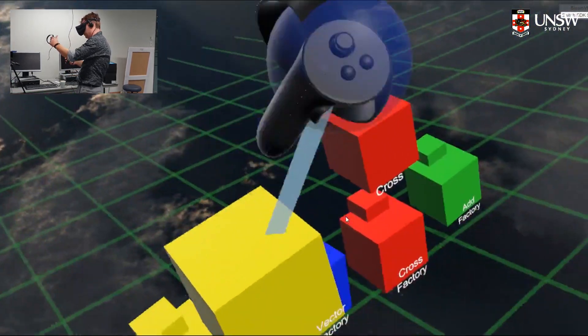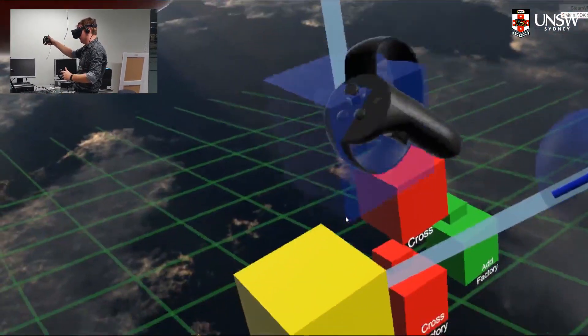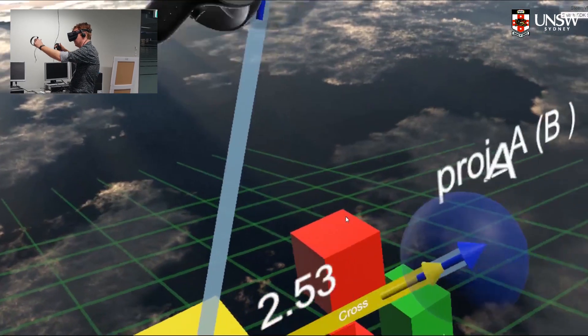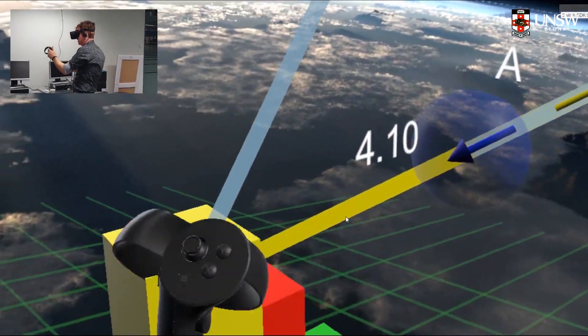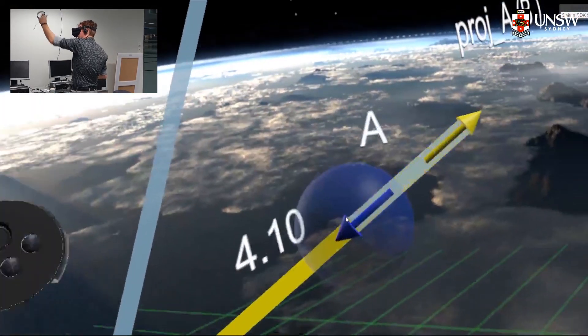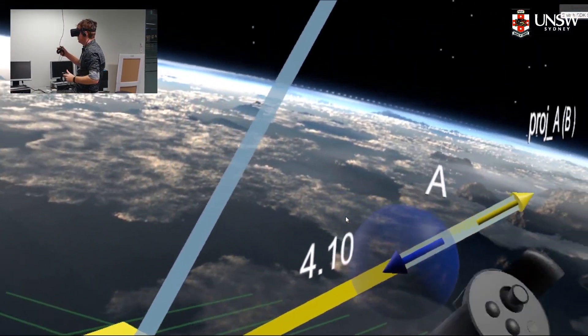I have one vector which defines the operation and another vector which is the input to that operation. Then I have the projection, which is in this case the projection of the vector b onto the vector a, which gives you this.